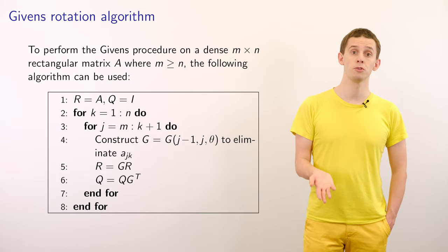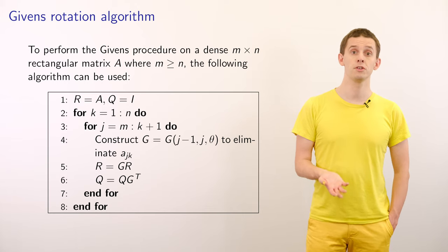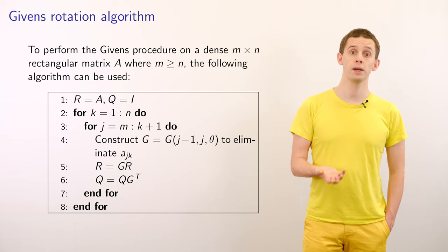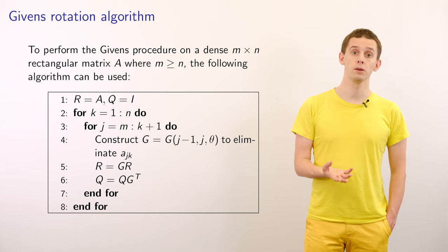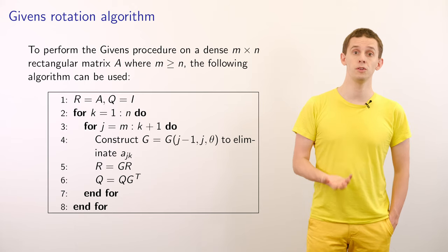Now let's look at performing the Givens rotation procedure to compute the QR decomposition of a dense matrix A of size m by n. We can use the following algorithm. To begin, we'll set R equal to our input matrix A, and Q equal to the identity.